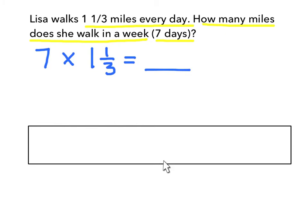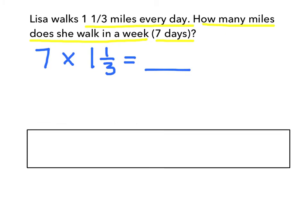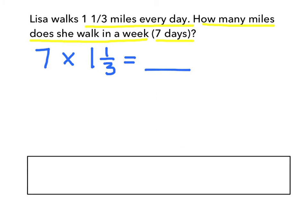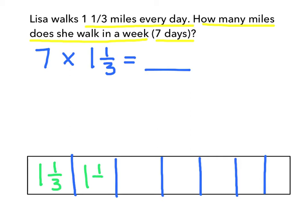In this fraction bar, we are going to break it into seven equal pieces, so I'm going to do that below. Now each of the seven pieces is worth the same amount — they are each 1 and 1 third. And you can think of each of these parts of the bar as one day of the week.